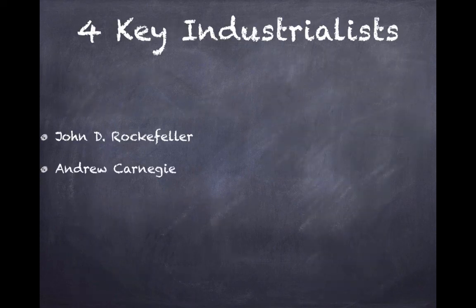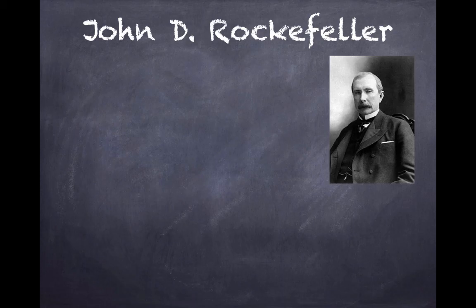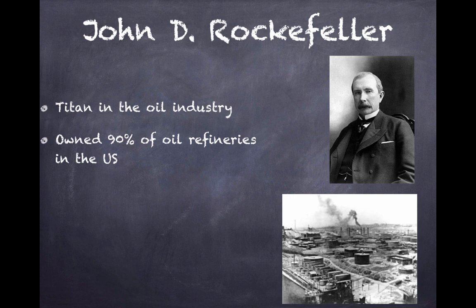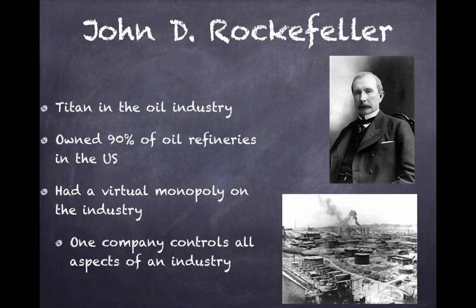Four key industrialists you should be familiar with: John D. Rockefeller, Andrew Carnegie, J.P. Morgan, and Henry Ford. You need to identify the industry each one worked in and their key achievements. John Rockefeller was a titan in the oil industry — there really wasn't anyone comparable in American industry at the time. He owned 90% of oil refineries in the U.S. — circle and underline that 90%. Refining oil into gasoline, it was essential for engines and transportation, and with the growth of the car, essential for the American economy.